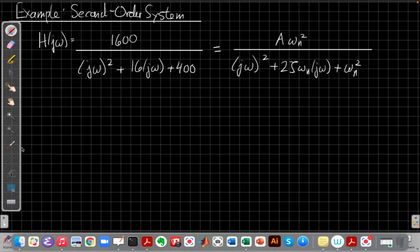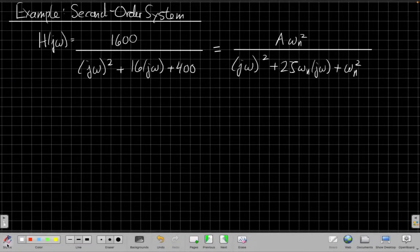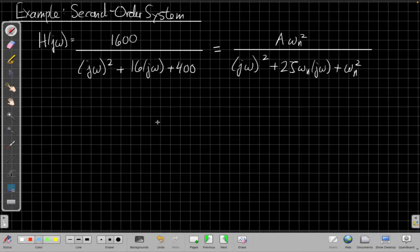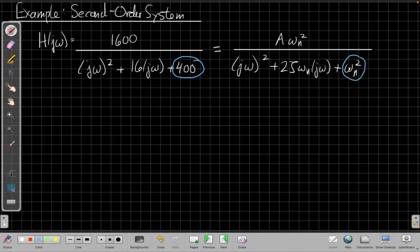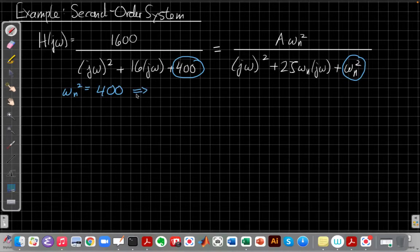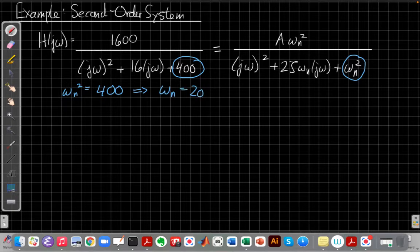So when I put it this way, the place I usually start to figure out where all the terms go in the standard form is to match up the constant with the natural undamped frequency squared. So we know for this example that ωn² is 400, so if I take the square root of both sides, I get that ωn equals 20. So the natural undamped factor for this system is 20 radians per second.